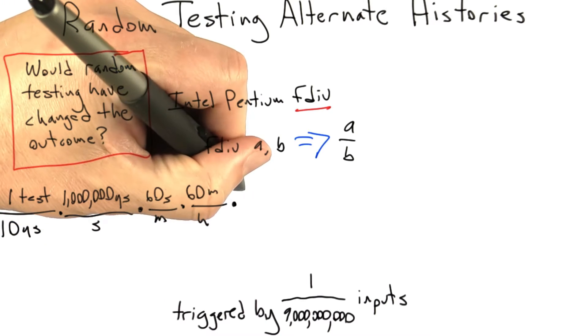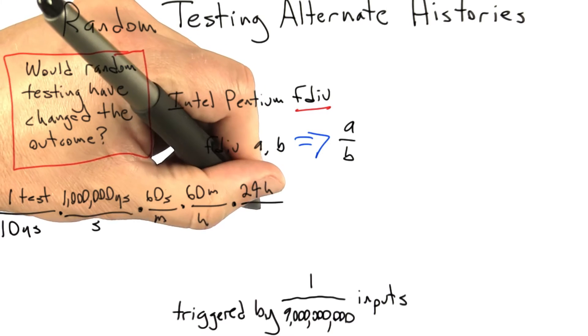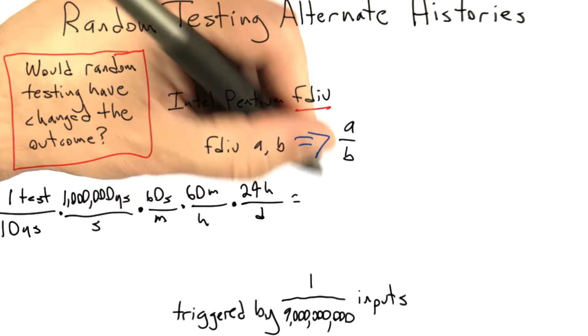Now, there are a million microseconds in a second, 60 seconds in a minute, and 60 minutes in an hour, and 24 hours in a day.